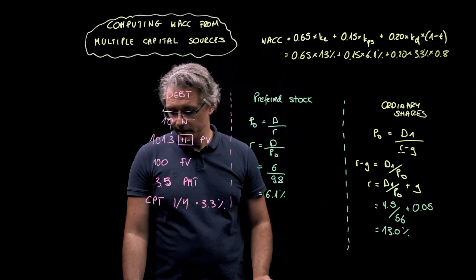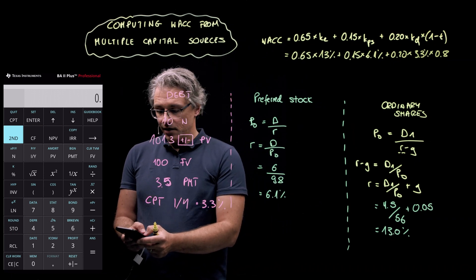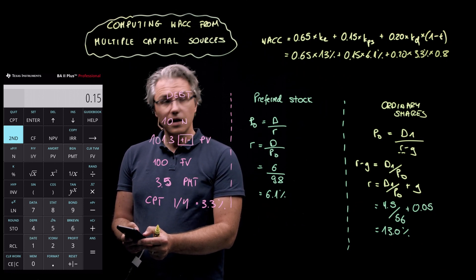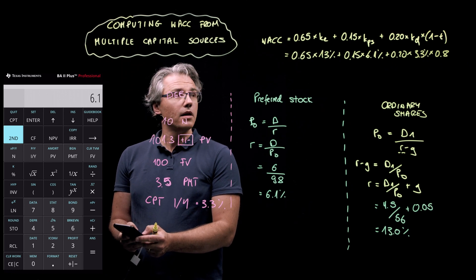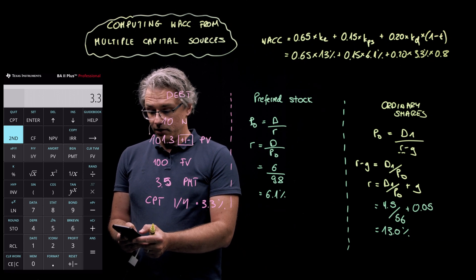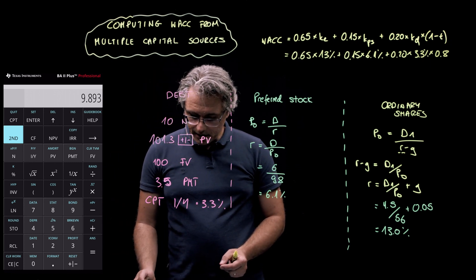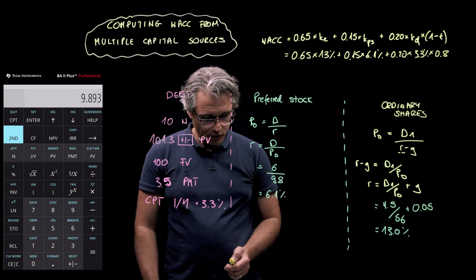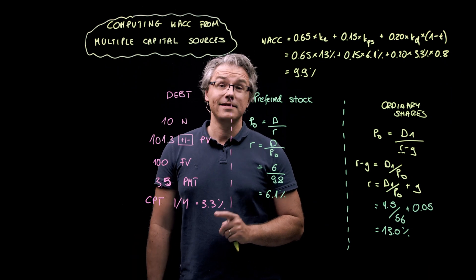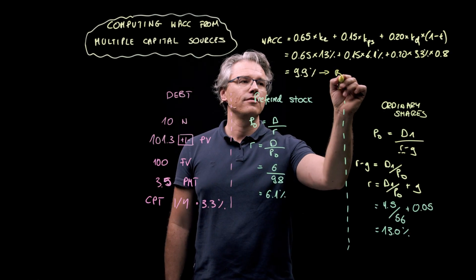And I can now take my calculator and do this computation. Let's hope I don't make any mistakes inputting the numbers. So, 0.65 times 13, plus 0.15 times 6.1, plus 0.2 times 3.3, but multiplied by 0.8. I am looking at a figure equal to 9.9%. So, as we can easily see, checking the possible solutions to this question, this actually corresponds to answer B.